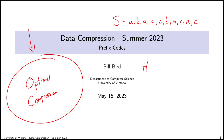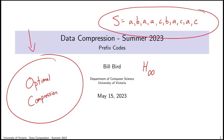We saw that computing the true entropy, which I denote h-infinity, was intractable — extremely difficult. Even if we could compute it for some input sequence, having that number wouldn't tell us much about how to perform good compression. Moreover, there's still the question of what overhead would be needed to explain to a decompressor what we're doing. We'll bring overhead back into the discussion later in this lecture, and certainly in the next ones.